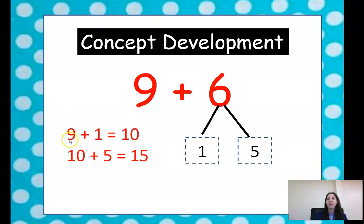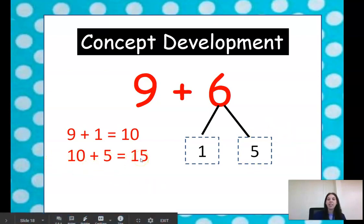So now we have 9 plus 1 equals 10. So we made our group of 10. And then we have 5 left. 10 plus 5 equals 15.